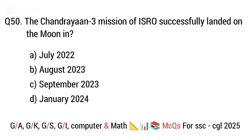Question 50. The Chandrayaan-3 mission of ISRO successfully landed on the Moon in? The right answer is option C. August 2023.